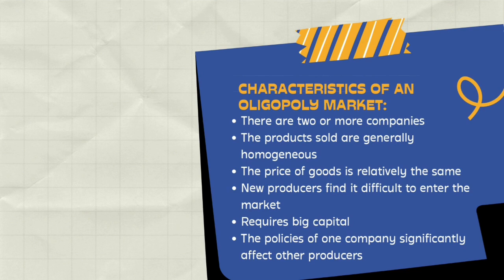The fourth characteristic is that new producers will find it very difficult to enter the oligopoly market, because established producers already play with prices so consumers don't switch. New producers will certainly not be able to catch up with this. A company can provide low prices, but as a new business it is very difficult because the profits are very small.